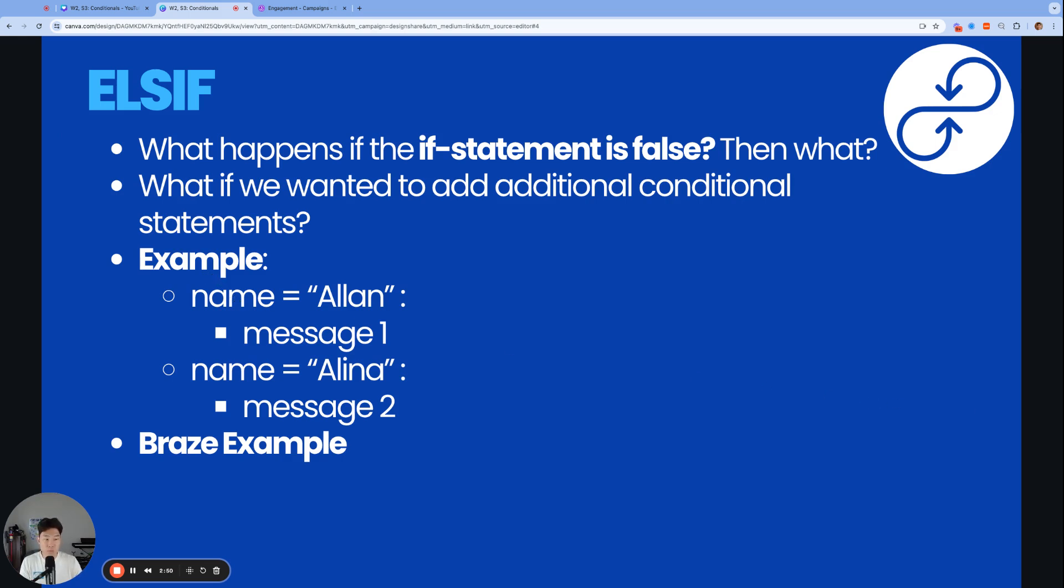So let's say we had a message for someone named Alan, and we had another message for someone named Alina. How do I make sure that, depending on what their name is, they get the right message? And that's where the else if tag comes into play. Else if is the words else and if matched together. And else if is saying, if the first or previous conditional statement is false, then try this next conditional statement instead.